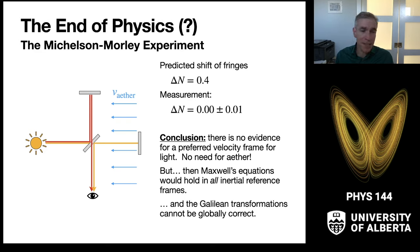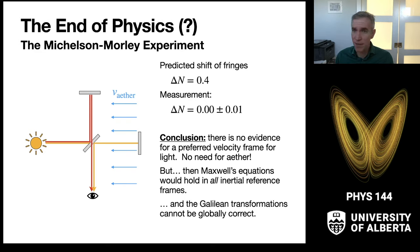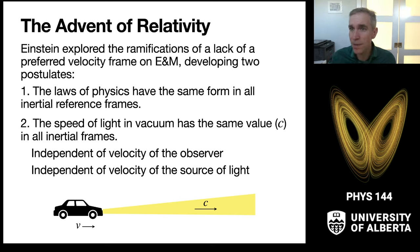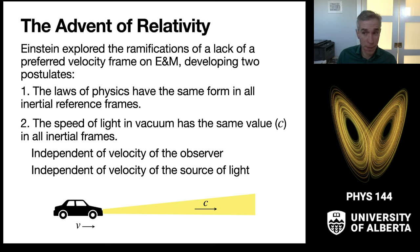Physics says: if there's no evidence for something that should be there, you get rid of it. This leads to uncomfortable implications — Maxwell's equations would have to hold in every inertial reference frame, and therefore the Galilean transformations simply can't be correct. This was the beginning of new physics rather than the end of the old, leading to the development of the theory of relativity by Albert Einstein.